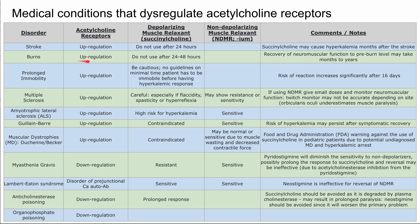Burns are the next disorder. These also cause upregulation of acetylcholine receptors. You don't want to use succinylcholine 24 to 48 hours after the burn, and the recovery of neuromuscular function to pre-burn levels can take months to years. Again, the concern is hyperkalemia.